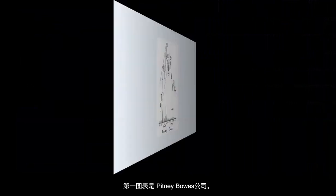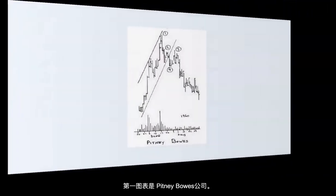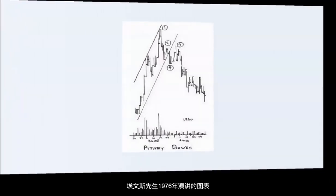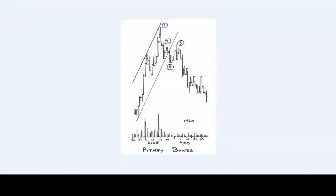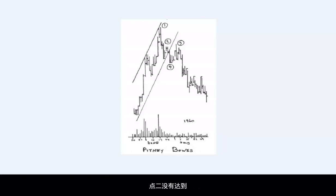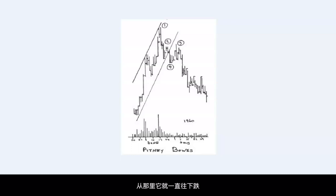Chart number one is Pitney Bowes, a chart from Mr. Evans' lecture from 1976. You can see all the important points marked as discussed above. At point 1, it touches the uptrend overbought line. At point 2, it fails to reach it, tries to regroup, and then fails miserably at point 3. From there, it is all downhill.